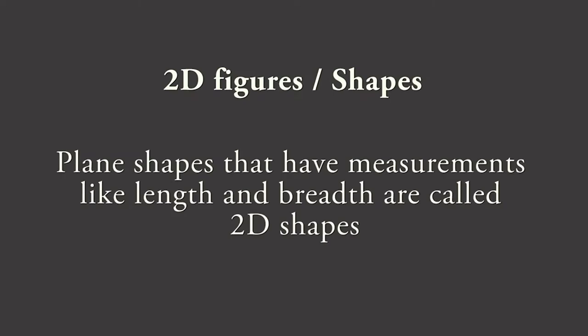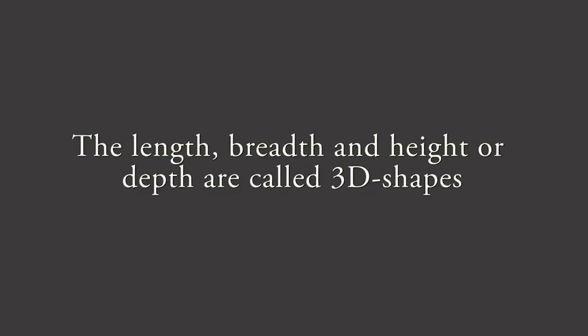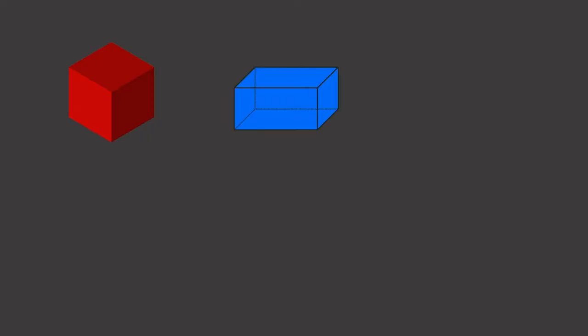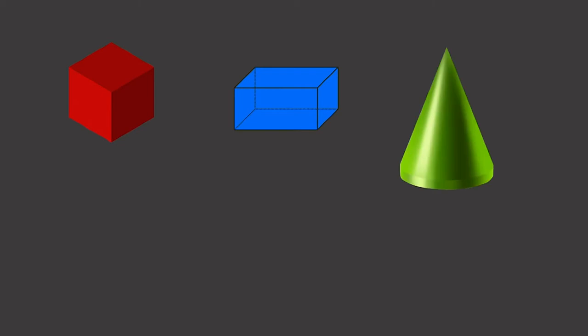2D figures or plane shapes that have measurements like length and breadth are called 2D shapes. For example, a rectangle, a square, a triangle, or a circle. 3D figures or solids are solid objects having three measures like length, breadth, and height or depth, and they are called 3D shapes.